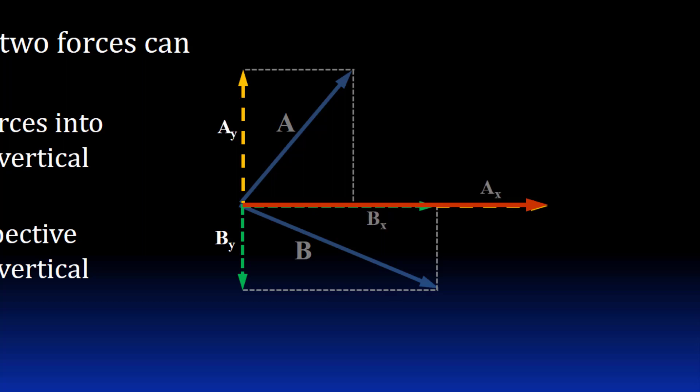Next, the Y components. AY and BY are in opposite directions with AY a little bigger. The net result is the red short Y-direction component for the resultant vector in the positive Y direction.